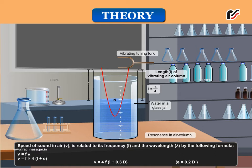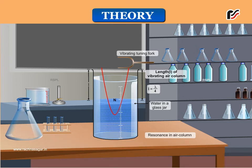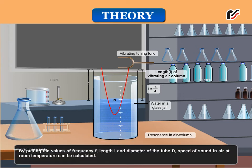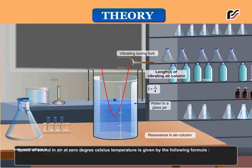Note: E is also given as 0.2D in some references. By putting the values of frequency, length, and diameter of the tube D, the speed of sound in air at room temperature can be calculated. The speed of sound in air at 0 degrees Celsius is given by the formula: V₀ equals VT minus 0.6 times T.